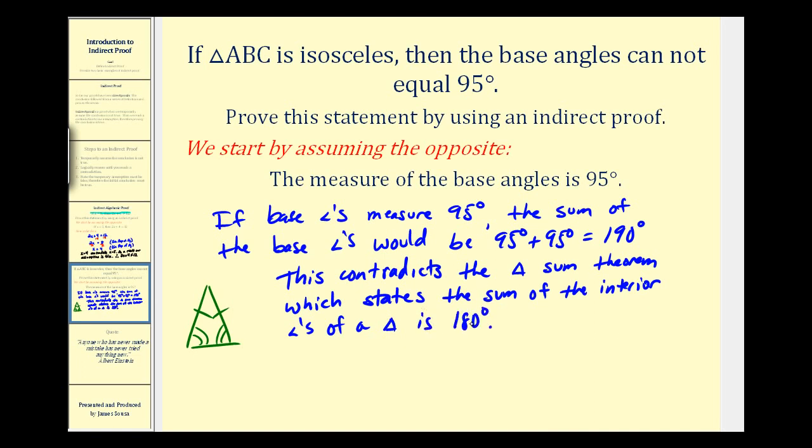So if the sum of the interior angles is equal to one hundred eighty degrees and the sum of the base angles here is one ninety, this is all we need to prove the given statement because this is an obvious contradiction. Therefore, we can conclude that the sum of the base angles of an isosceles triangle cannot equal ninety-five degrees, and we have our indirect proof.